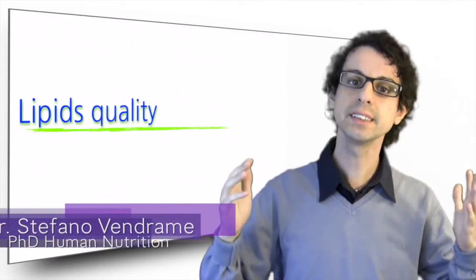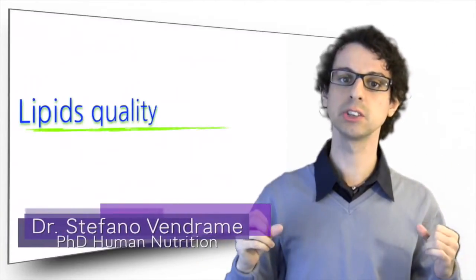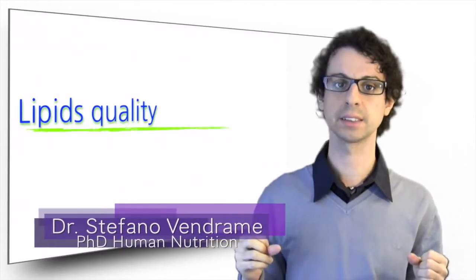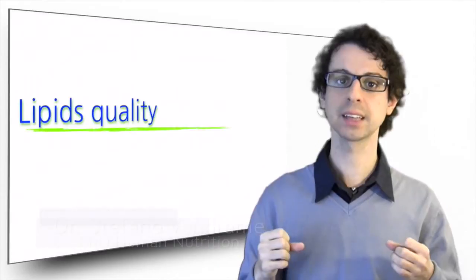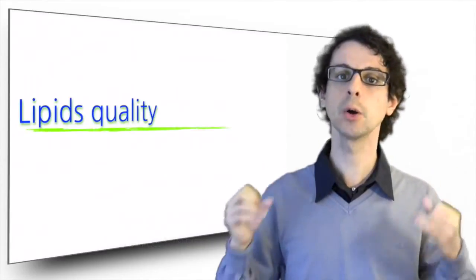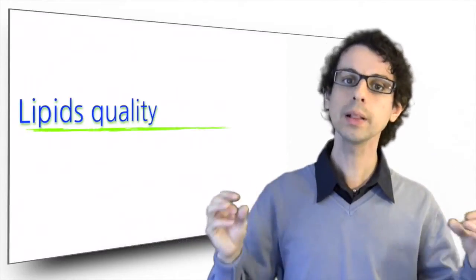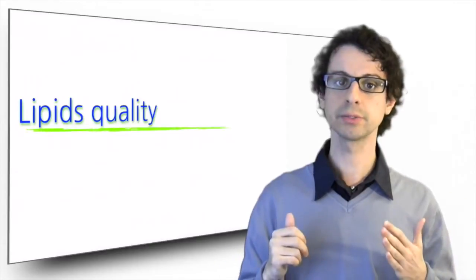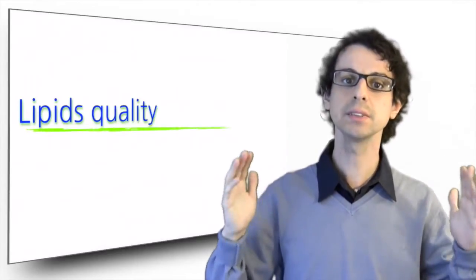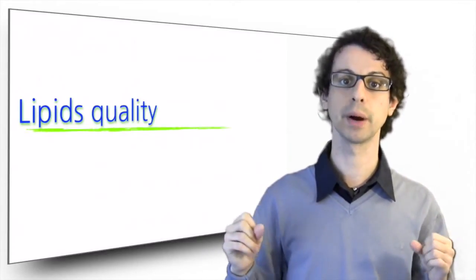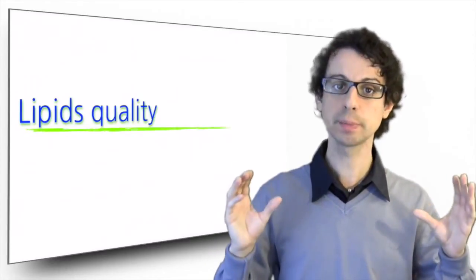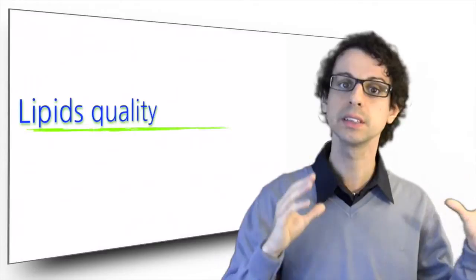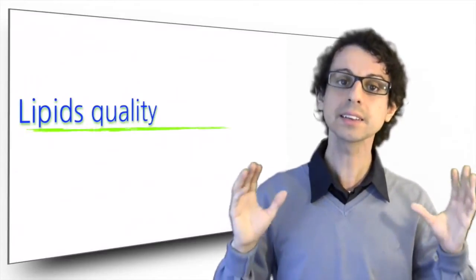Now, why have we insisted in making all those distinctions in the structure of fatty acids? Saturated and unsaturated, mono and polyunsaturated, cis and trans, omega-6 and omega-3? Well, because these structural differences result in very different behaviors of lipids in our body. So the quality of lipids in our diet very much depends on the balance between these different groups of fats. Let's start examining them from a nutritional point of view.